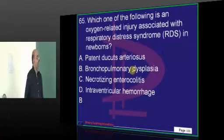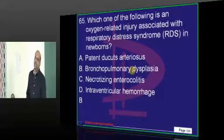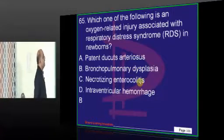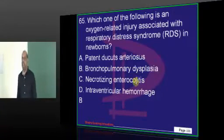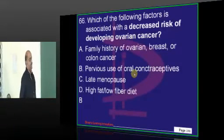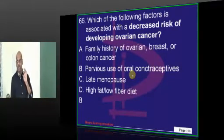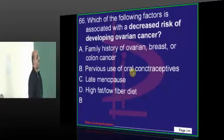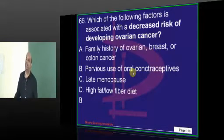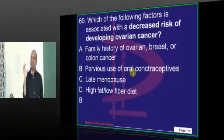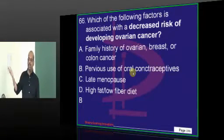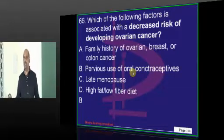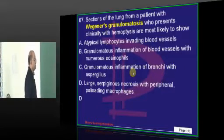Coming to respiratory distress syndrome — if you give too much oxygen to the baby, bronchopulmonary dysplasia is the typical outcome of free radical injury from insufflation of 100% oxygen. Ovarian cancer risk decreases if ovulation frequency decreases, because every ovulation causes a breach on the surface of the ovary predisposing to carcinogenic exposure. Contraception prevents ovulation and reduces the risk of ovarian cancer.